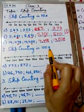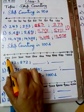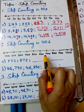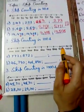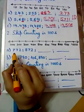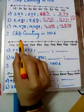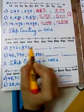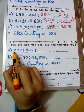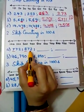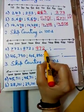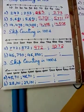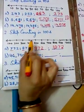Next topic is skip counting in hundreds. Hundreds means if you have 100 rupees, one more 100 makes 200, one more makes 300, then 400, and so on up to 1000. Let us understand this with a question: 772. In skip counting in hundreds, we change only the hundreds place — the third digit from the right. So: 772, 872, 972, and then 1,072.